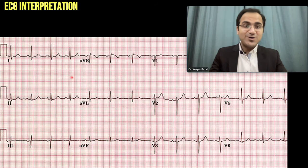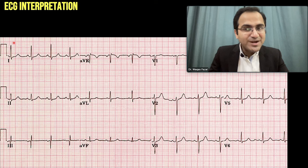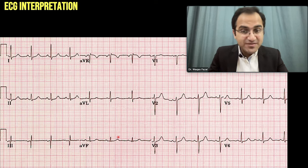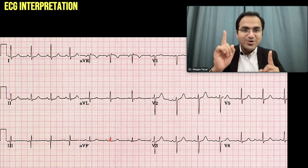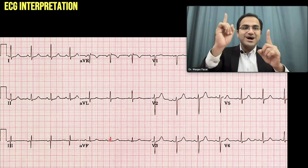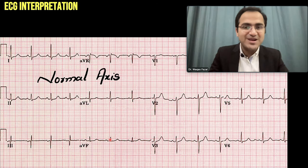Now let's solve some ECGs. Looking at Lead I — it is pointing upward. Looking at Lead aVF — aVF is also pointing upward. Both are pointing upward, so it is a normal axis.